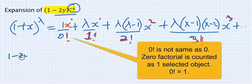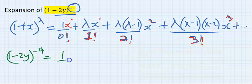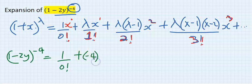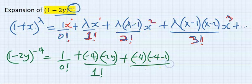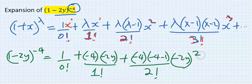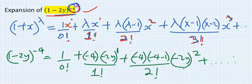Applying this to (1 − 2y)^(−4), where λ = −4 and x = −2y: the first term is 1/0!, the second term is (−4)(−2y)/1!, the third term is (−4)(−4−1)/2! · (−2y)², the fourth term involves (−4)(−5)(−6)/3! · (−2y)³, and so on. This is how we expand any binomial expression with a negative power, a fraction, or a negative fraction.